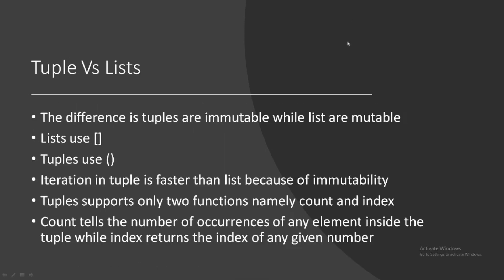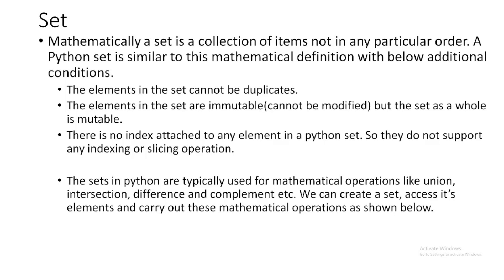The difference between tuple and list: tuples are immutable — they cannot be changed once created — but lists are mutable and their elements can be updated. Lists use square brackets and tuples use parentheses. Iteration in a tuple is faster than in a list because of immutability. Tuples support only two functions: count(), which tells the number of occurrences of any element, and index(), which gives the index of a given element.